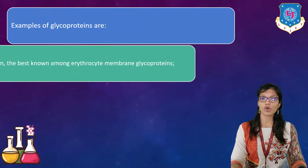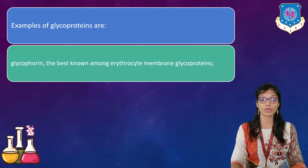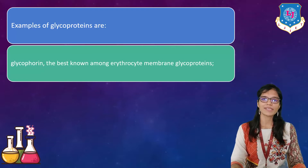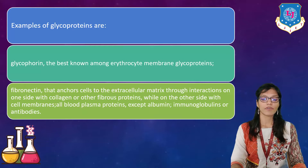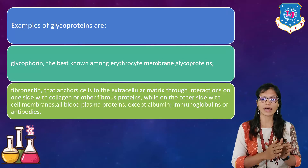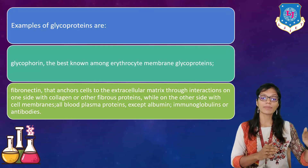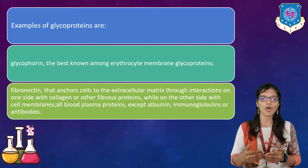Examples of glycoproteins include glycophorin, which is the best known among erythrocyte membrane glycoproteins — it is present in our blood. Next is fibronectin, which anchors cells to the extracellular matrix through interactions on one side with collagen or other fibrous proteins, and on the other side with cell membranes. Almost all blood plasma proteins except albumin and immunoglobulins or antibodies are glycoproteins.